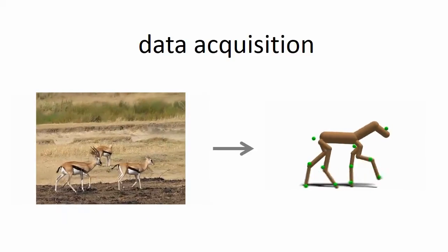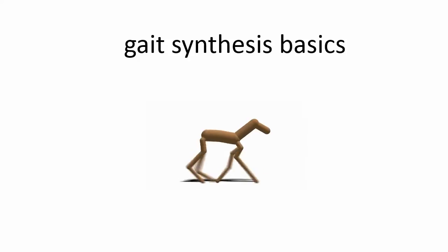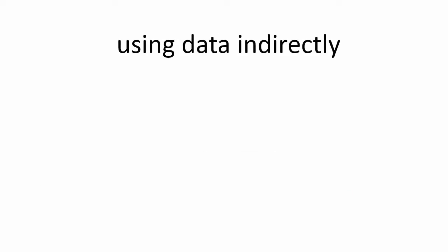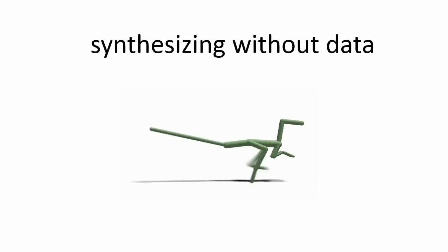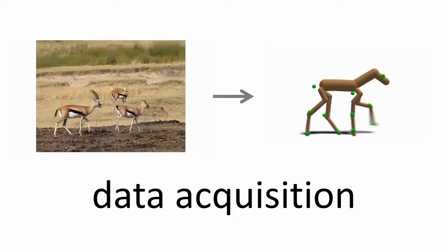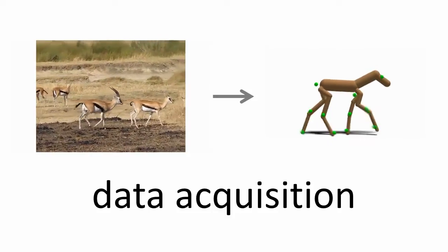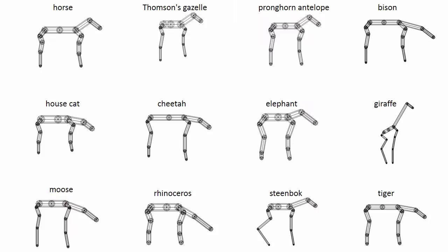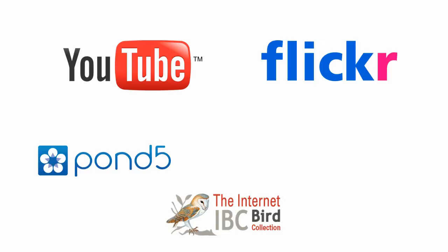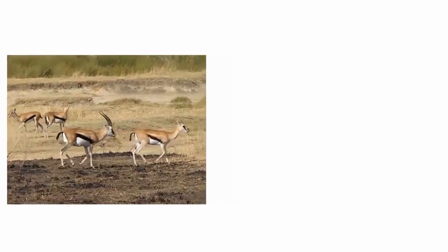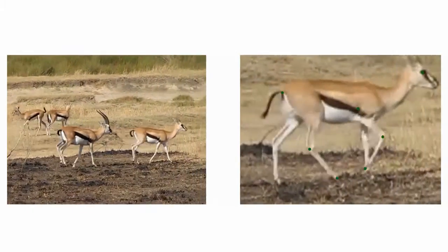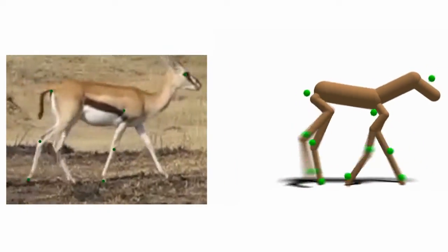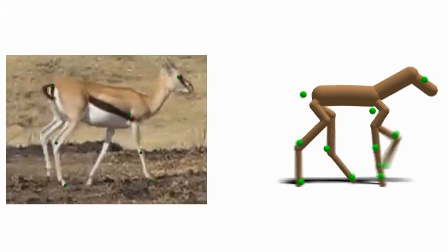I'll start by describing how we get some of the data our technique uses — essentially the construction of what we call a motion database. Our motion database consists of six bipeds and twelve quadrupeds. For each creature, we go out online and find a video of it walking, focusing on sagittal plane, that is, side-on walks, because these are both the easiest to find and process. Here's an example for the gazelle. For each animal, we do semi-manual processing and fit a physically valid 3D gait cycle to the motion in the video, and we consider this the ground truth motion for how that animal walks in the real world.